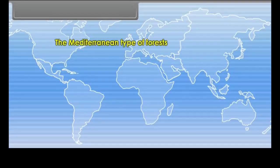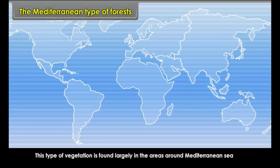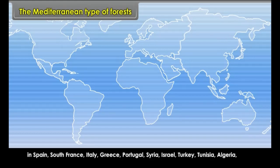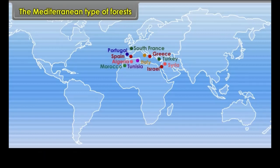The Mediterranean Type of Forests is found largely in areas around the Mediterranean Sea: Spain, South France, Italy, Greece, Portugal, Syria, Israel, Turkey, Tunisia, Algeria, Morocco, California and Central Chile.